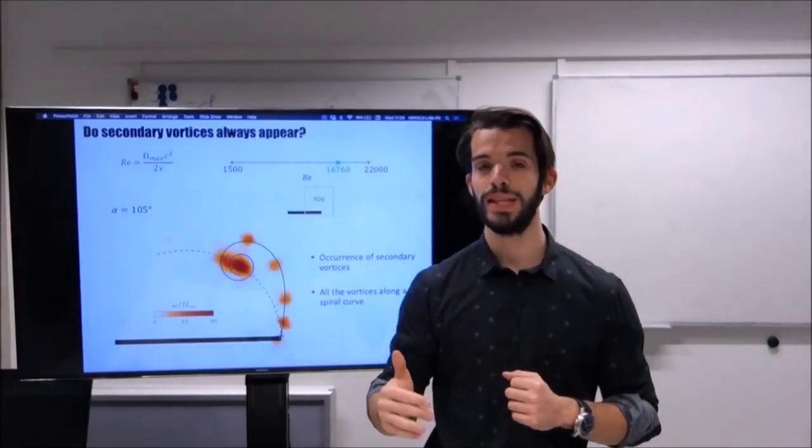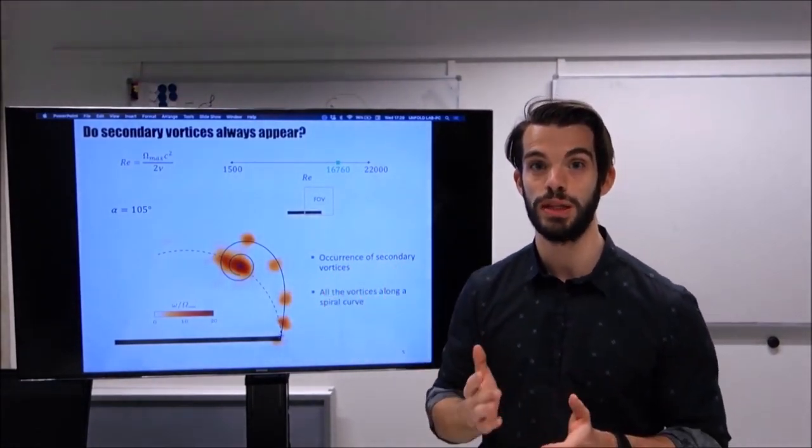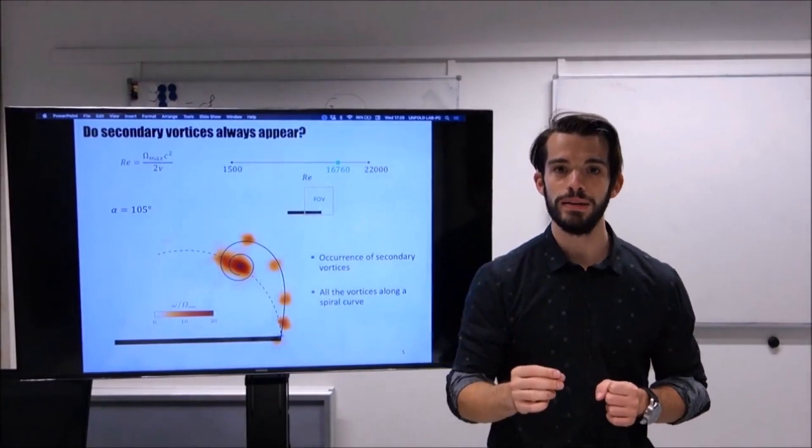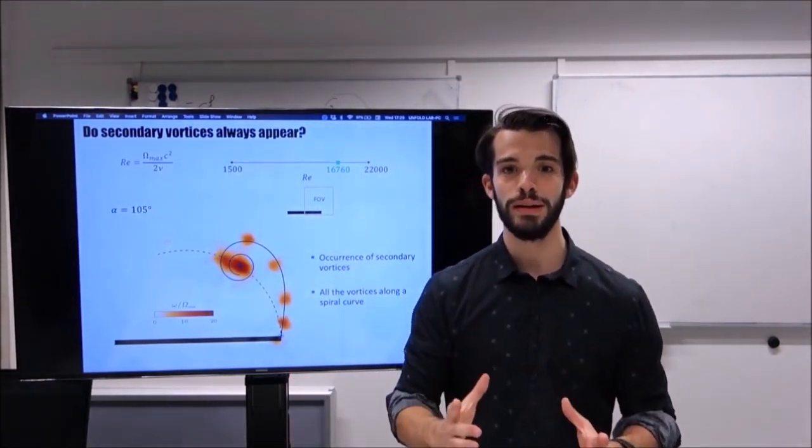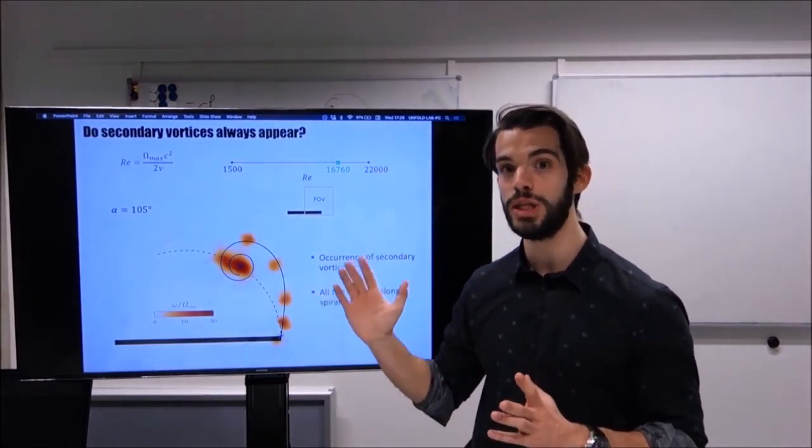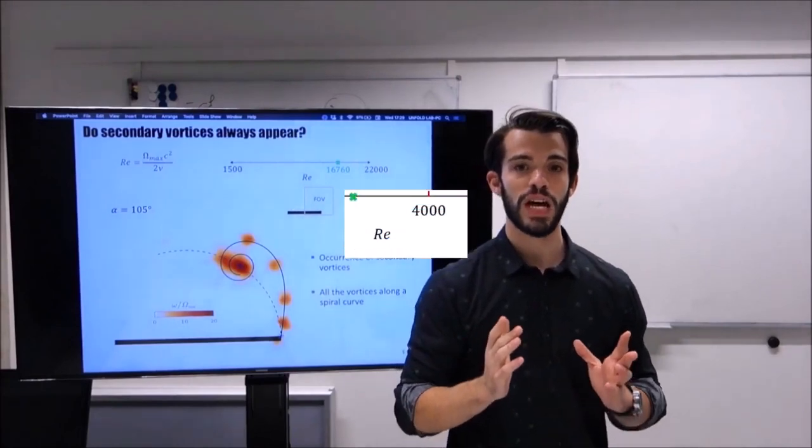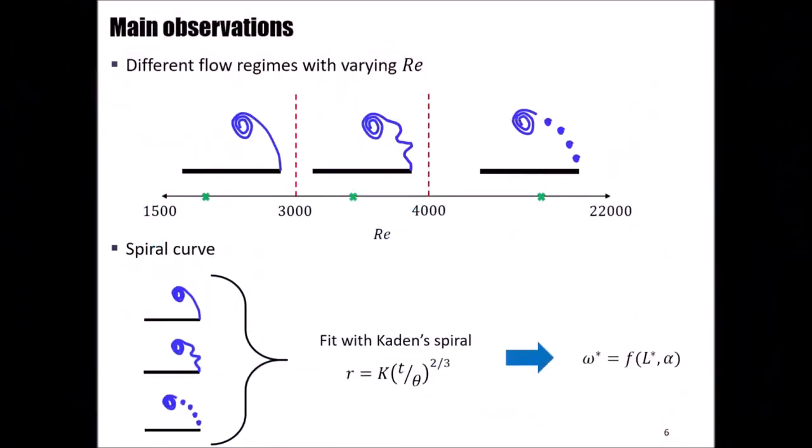As you probably noted, there are two things I stressed more during the previous animations. The first one is the way the shear layer evolves with increasing Reynolds number. The second one is how the three different regimes seem to follow pretty well a spiral shape. Varying the Reynolds number will vary the flow topology. We actually observed that for Reynolds numbers lower than 3000, the shear layer appears continuous. It starts to become unstable in a range between 3000 and 4000, and after that, the recurrence of secondary vortices replaces the shear layer.